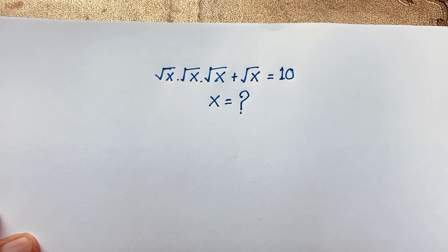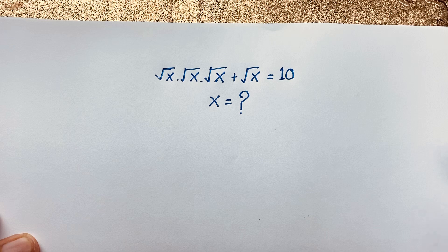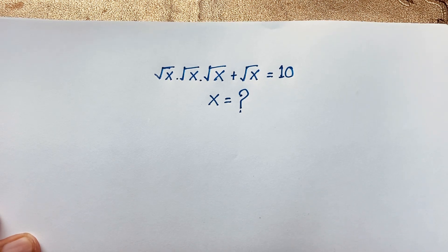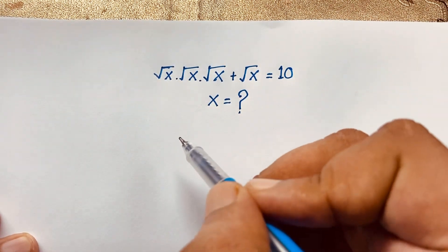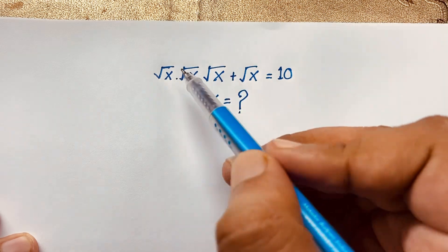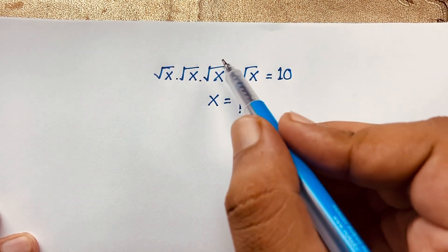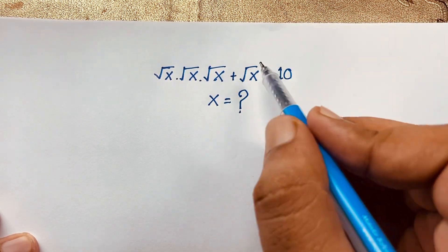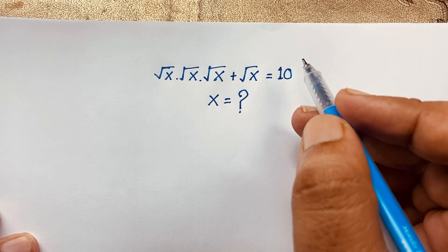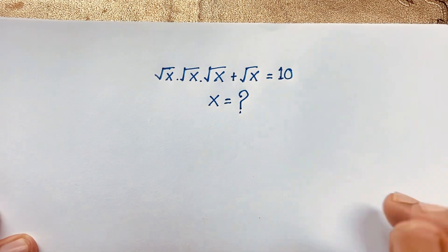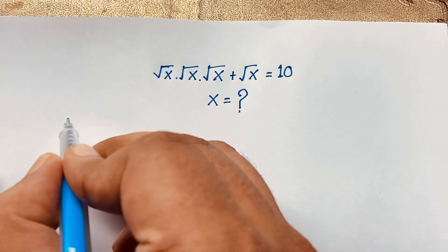Welcome to my YouTube channel. Today we have solved an interesting square root Math Olympiad question. It is a viral math problem. Our question is: square root x times square root x times square root x, plus square root x, is equal to 10. What is x? I will solve this question using an easy method.